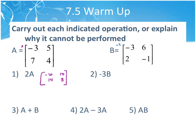And if I did negative 3 times B, I'd get 9, negative 18, negative 6, and positive 3. For the next problems, I would make sure I can do the whole thing before I start — for example, before I do the scalar on A, I'd make sure I could do the second part too.